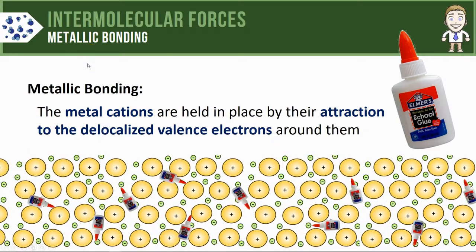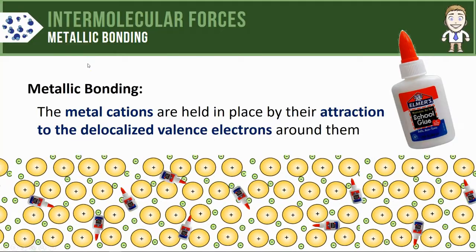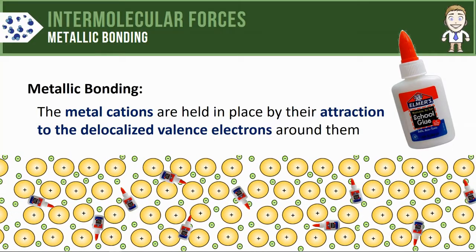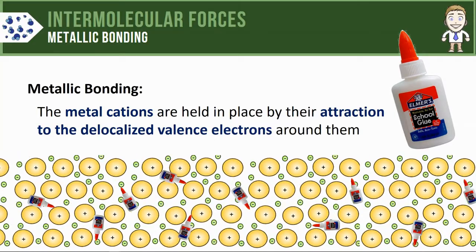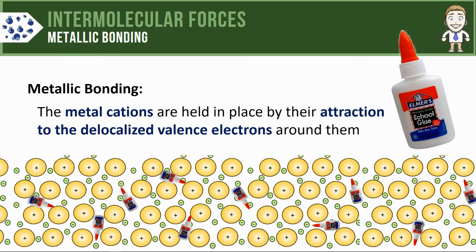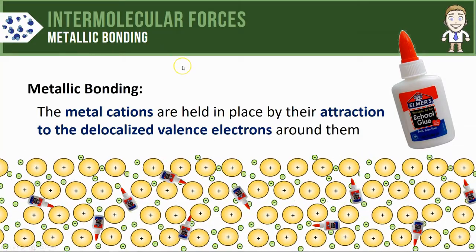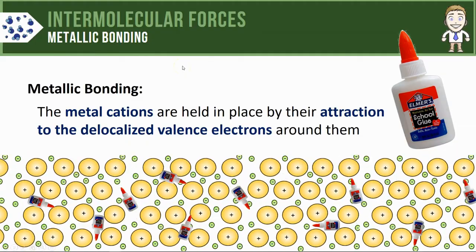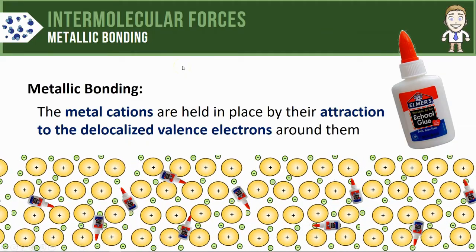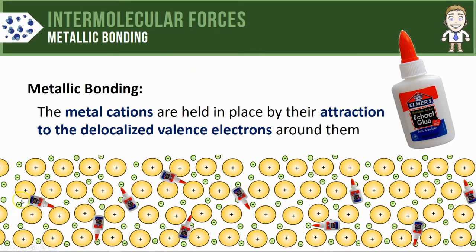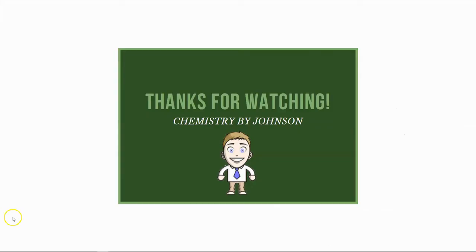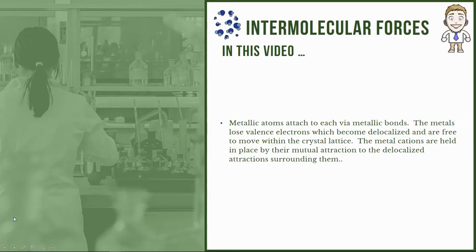I like to think of the delocalized electrons almost like a sort of glue. The positive metallic cations aren't attracted to each other, but they are attracted to the surrounding space, which is negative due to the presence of those valence electrons — and all the atoms get held in place as a result. That concludes this video on metallic bonding. Thanks for watching, and here's a brief summary.